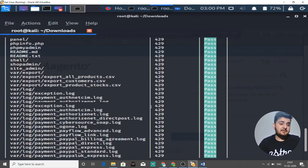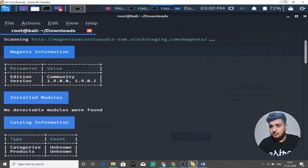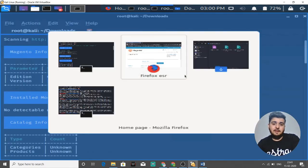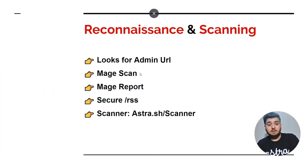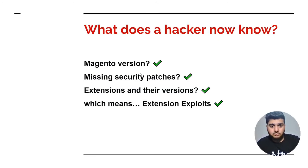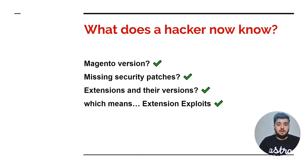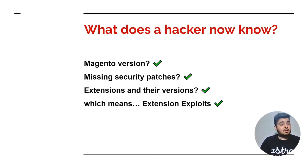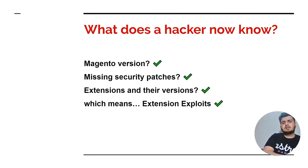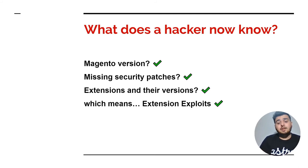This tool gives us a lot of information and it's really useful. So what does the hacker now know? He knows your Magento version, he knows which security patches are missing, he knows your extensions and their versions — which means he can look for extension exploits. When a hacker knows your extension versions, he'll be able to find out which extensions have available exploits.